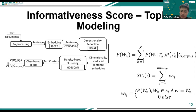After HDBSCAN generates the clusters, the topic probability is calculated by dividing the number of documents belonging to each topic by the total number of documents. The next process is calculating word probability using the class-based TF-IDF method. This technique can extract what makes each set of documents unique compared to others.